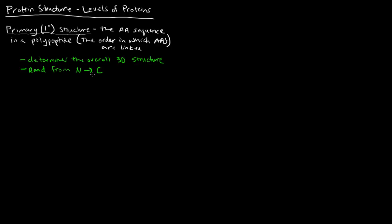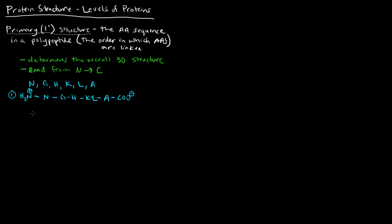To give you an idea of what primary structure entails: if we have a few different amino acids — asparagine, glycine, histidine, lysine, leucine, and alanine — there can be a variety of scenarios. In one scenario, we link them from the amino terminus as N, G, H, K, L, A, via peptide bonds, ending at the carboxy terminus. That could be one potential peptide.